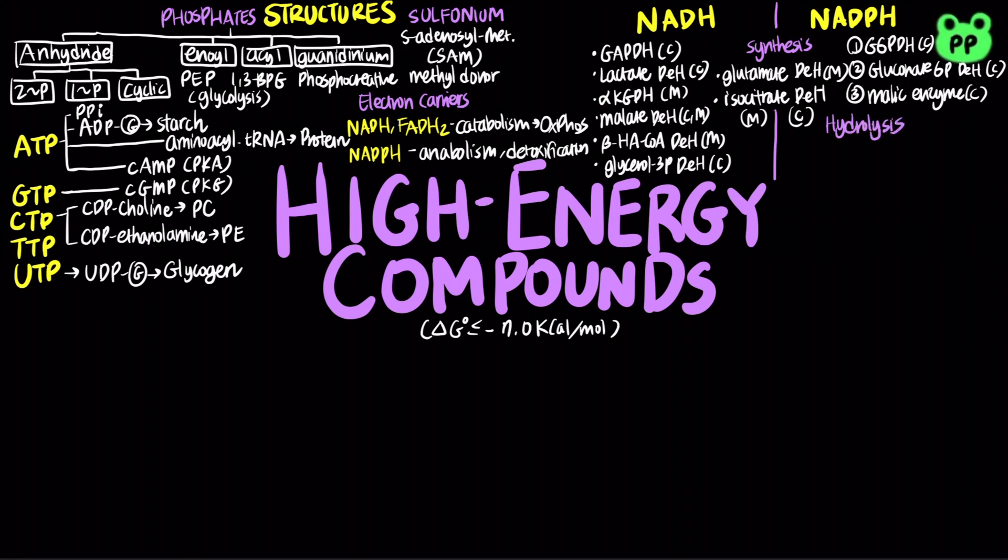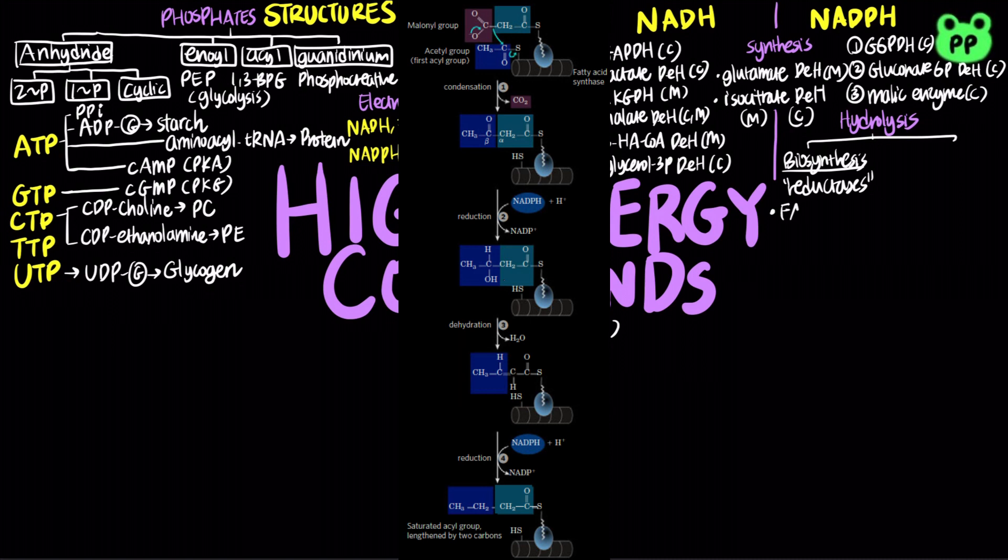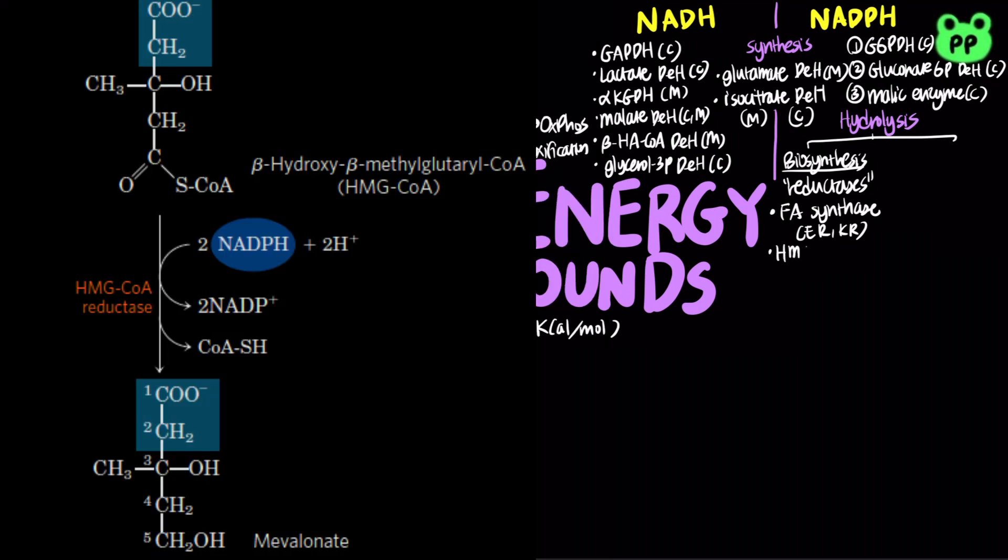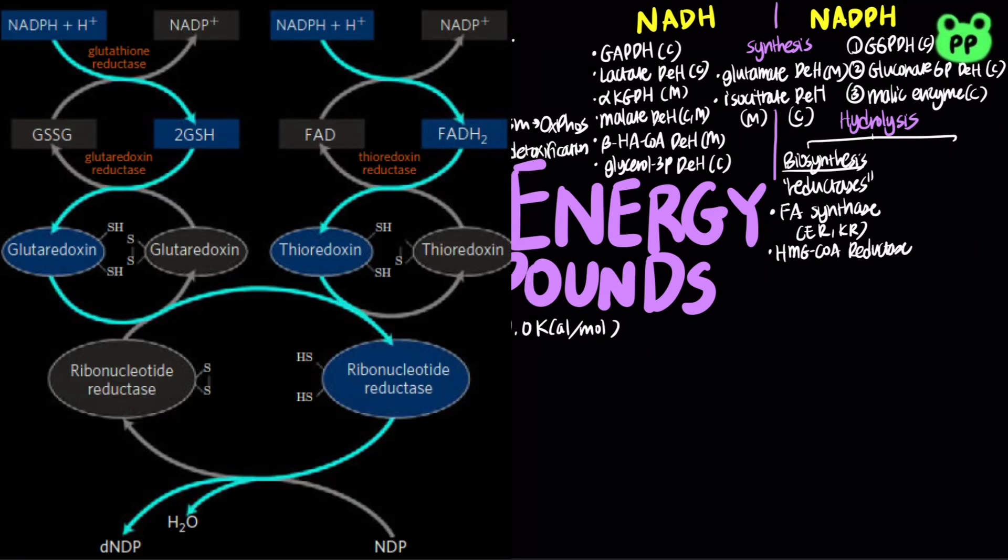Hydrolysis of NADPH are catalyzed by reductases, providing energy for biosynthesis of many lipids, as well as nucleotides, including fatty acid synthase, which contains enoyl-CoA reductase and ketoacyl reductase, HMG-CoA reductase, which leads to cholesterol biosynthesis, and ribonucleotide reductase, which leads to biosynthesis of nucleotides.